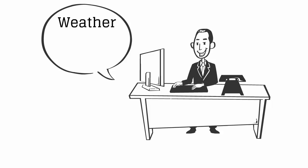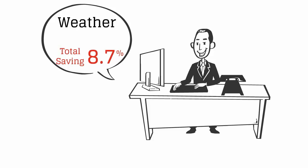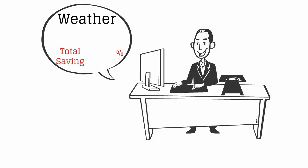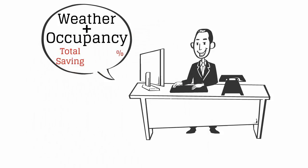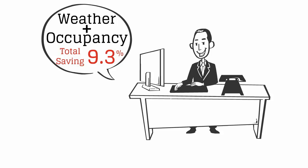Just taking the difference in weather across the two years into account, John saw that the energy savings were 8.7%. When John also added the analysis for the difference in hotel occupancy, the actual savings were 9.3%, not the original 6.3% he calculated from his utility bills.